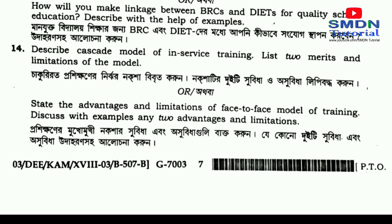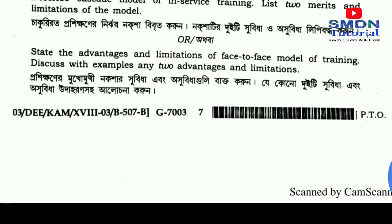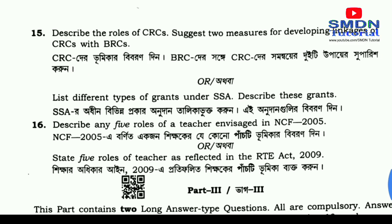Number 14: Describe the cascade model of in-service training. List two merits and demerits/limitations of the model. Also state the advantages and limitations of the face-to-face model of training. Discuss with example any two advantages and limitations. Number 15: Describe the role of CRCs. Suggest two measures for developing linkage of CRCs with BRC.